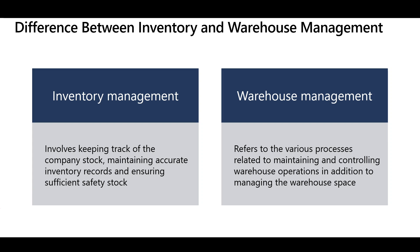Warehouse Management refers to the various processes related to maintaining and controlling warehouse operations, like item receiving, internal movement, and picking and packing operations, in addition to managing the warehouse space like racks, levels, and bins. In a nutshell, the difference is that Inventory Management involves tracking stock levels in quantity and amount, whereas Warehouse Management involves tracking the processes and the warehouse itself.